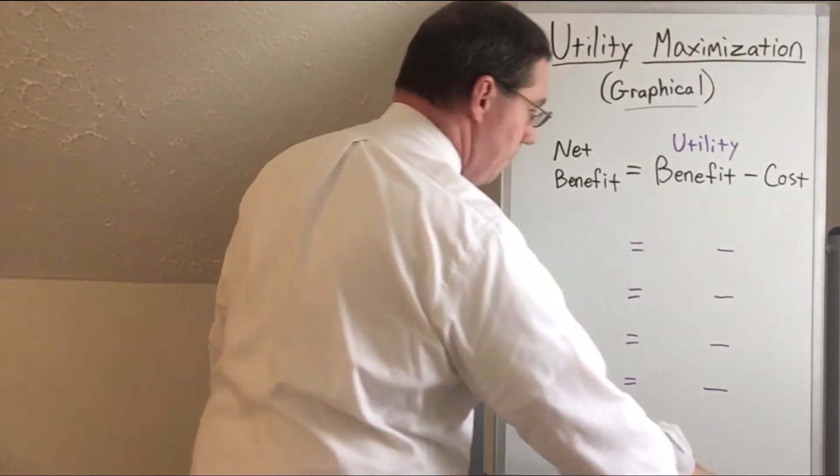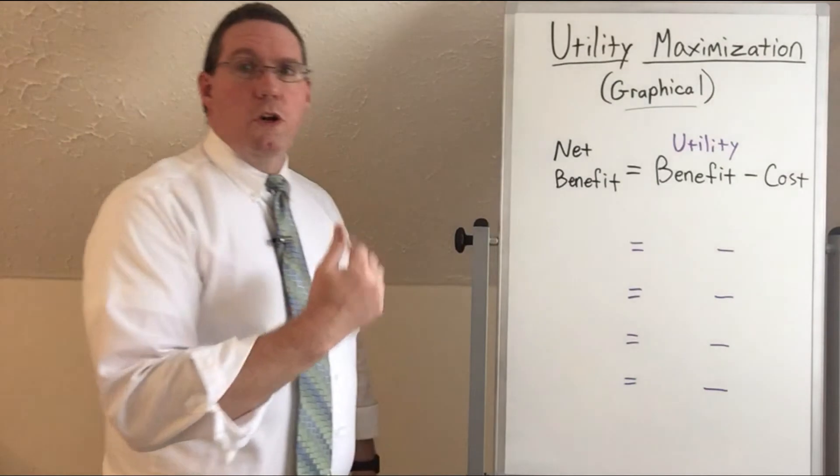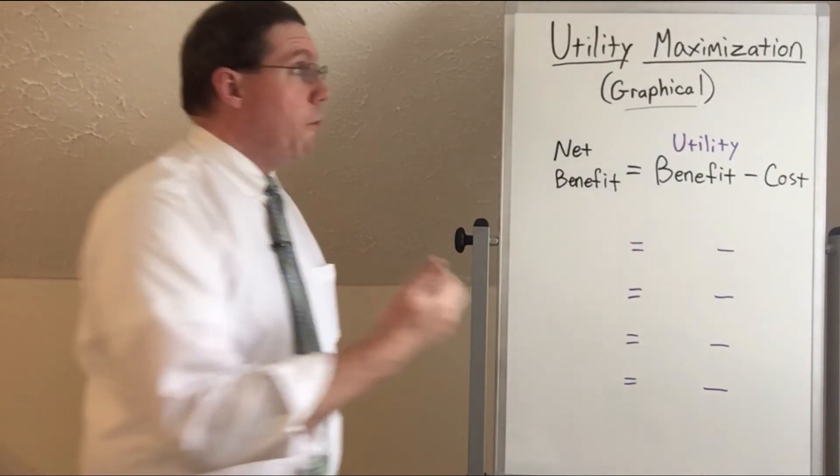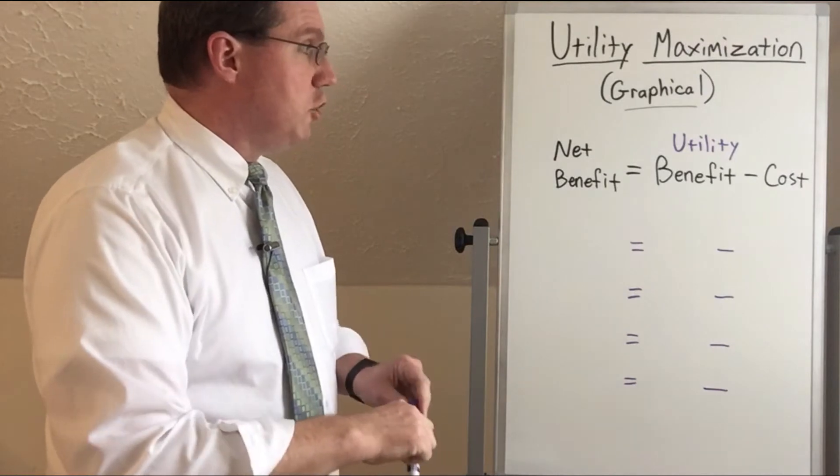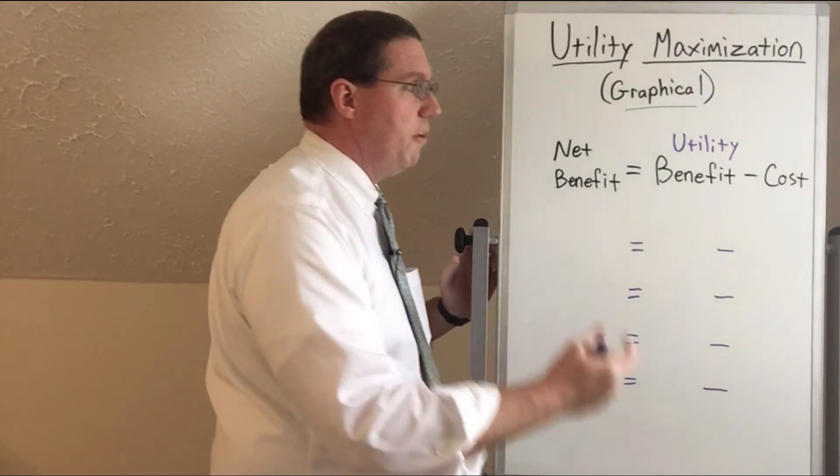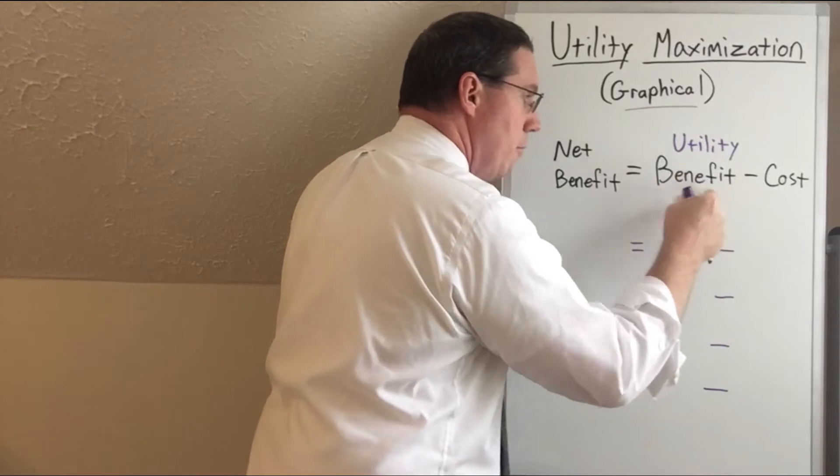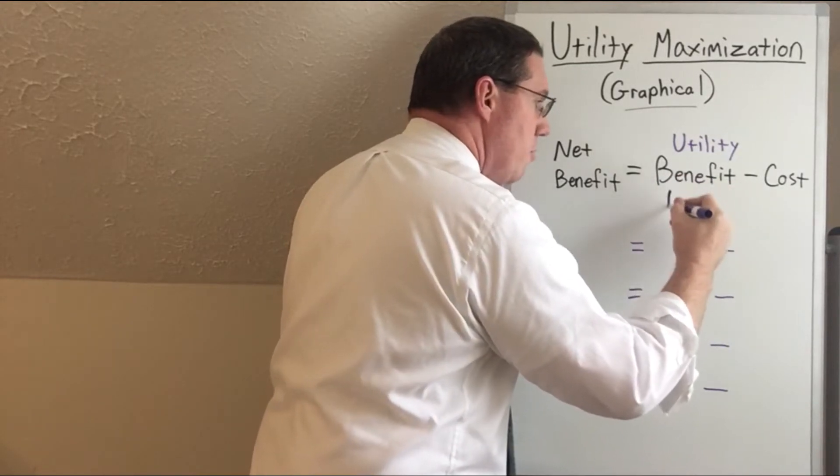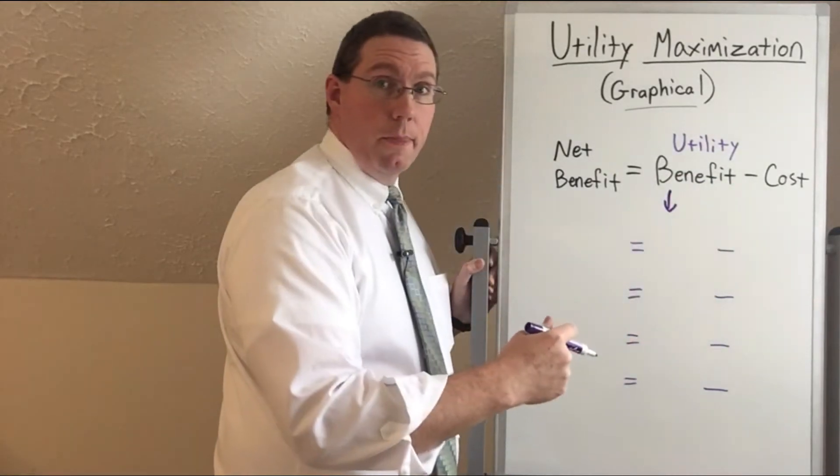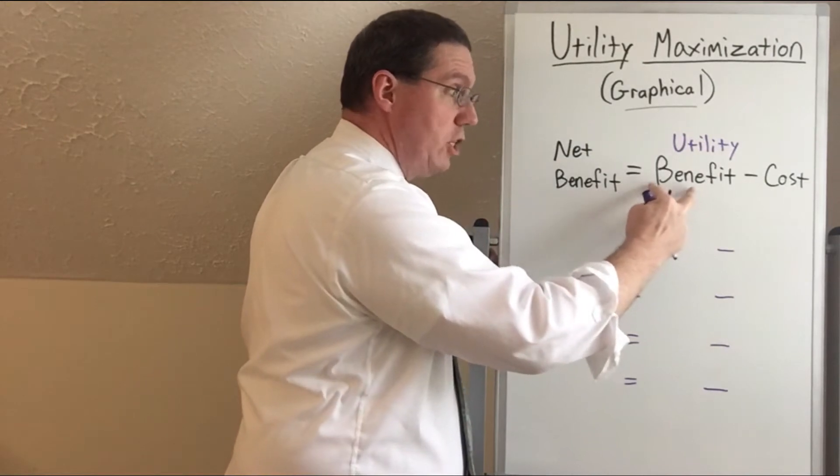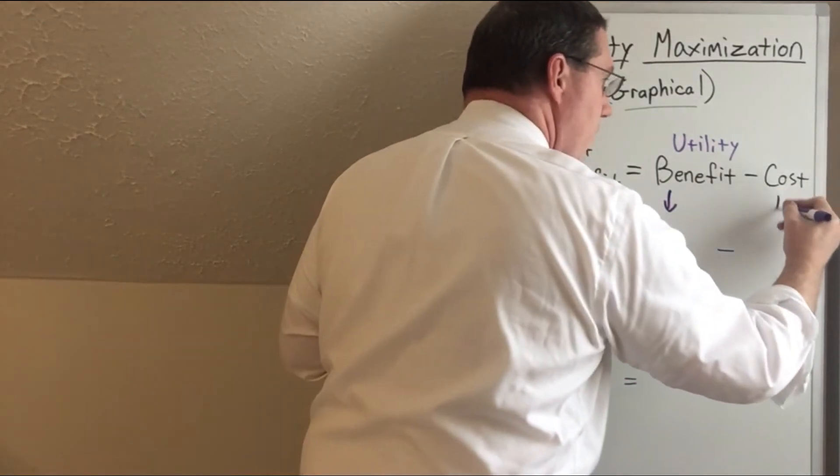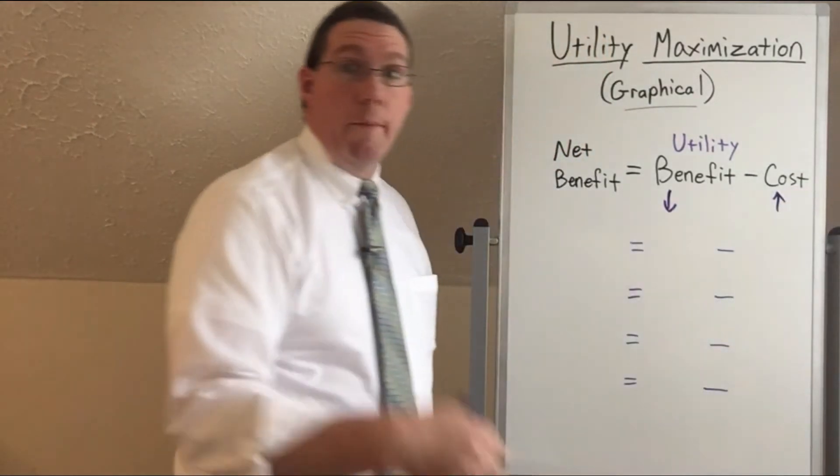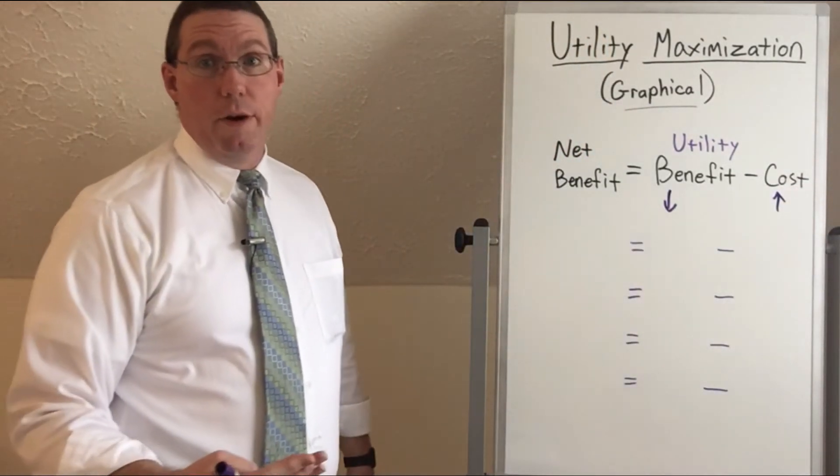The benefits are going to be what you get from consuming the thing, and the cost is what you have to give up to be able to get that thing. Here's the point I want to make: the more you consume, the more your utility will go up. But the law of diminishing marginal benefit means this number, the benefit from each item you consume, is going to go down. But the cost of each item you consume is going to go up because of the law of increasing opportunity costs.